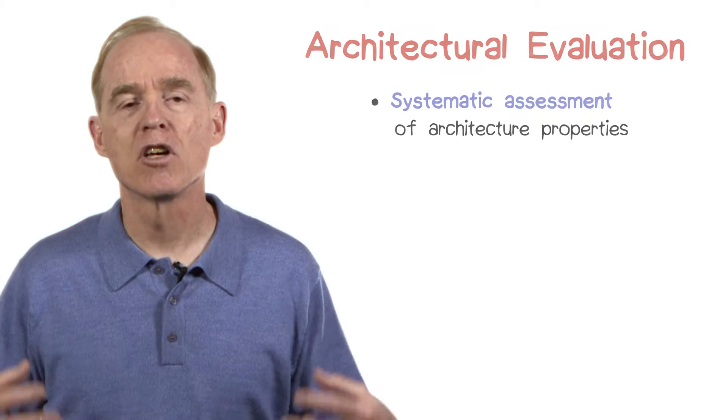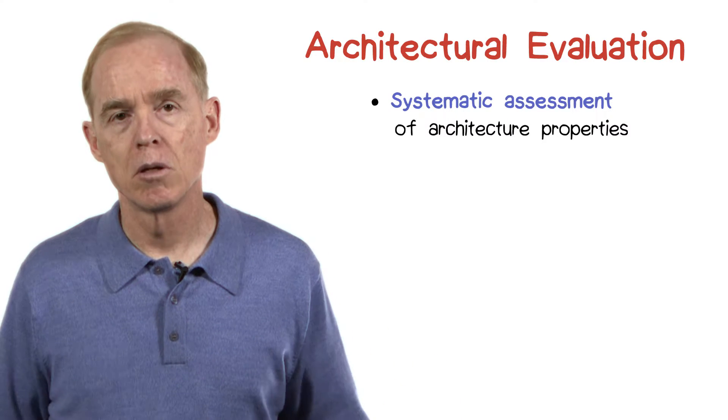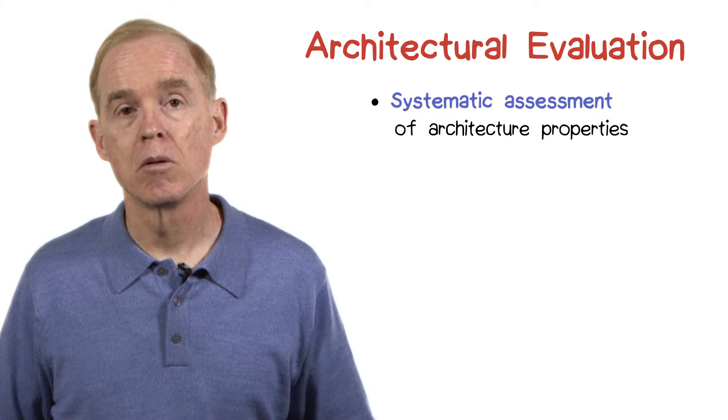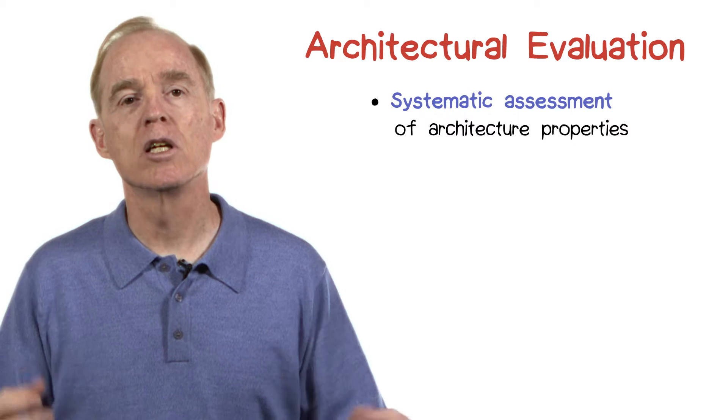The final thing I wanted to mention in this overview of software architecture is evaluation. It doesn't do you much good to develop a fancy architecture if it's not the right one. So we need some process by which we can judge the correctness, completeness, consistency, and other quality aspects of the architecture we've produced. Because of the importance of software architecture on the ultimate product, it's key to get it right — if we make a mistake, it's very costly to make a change.